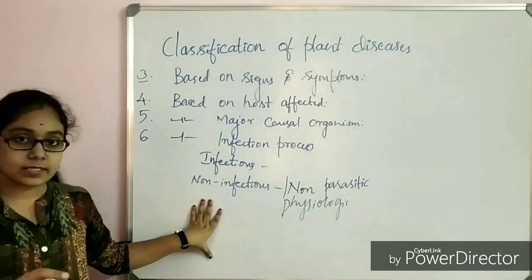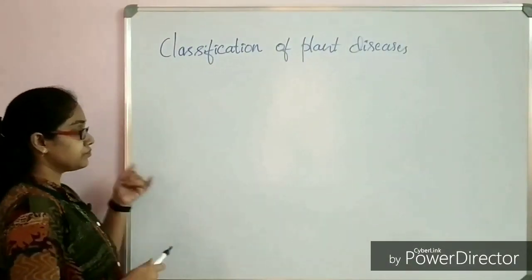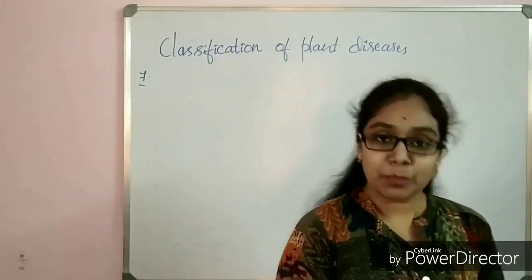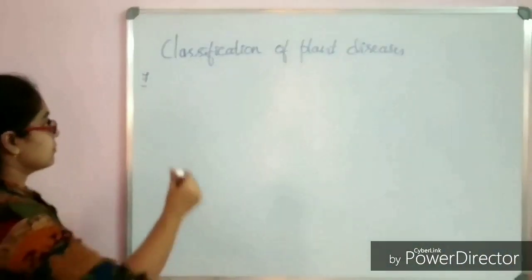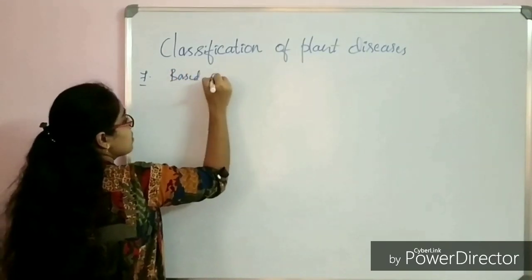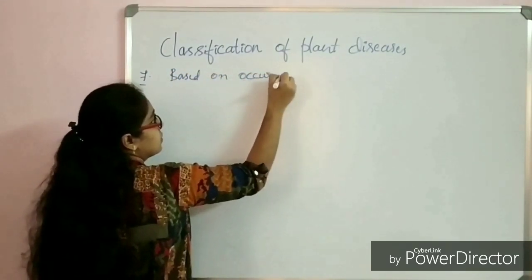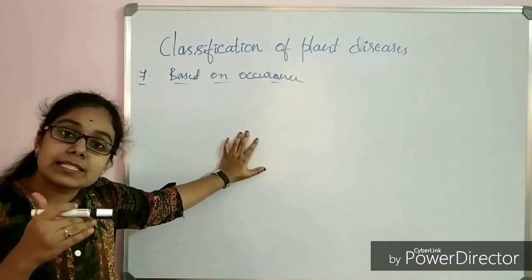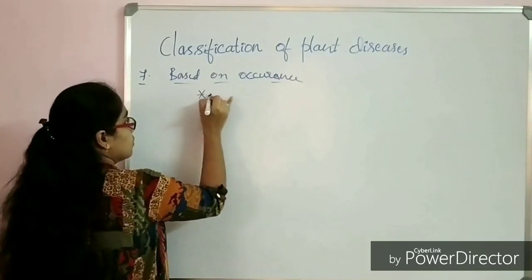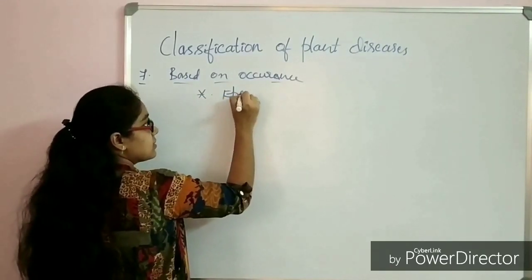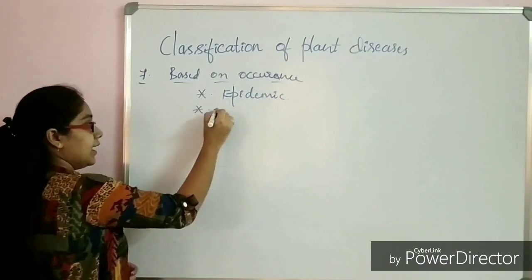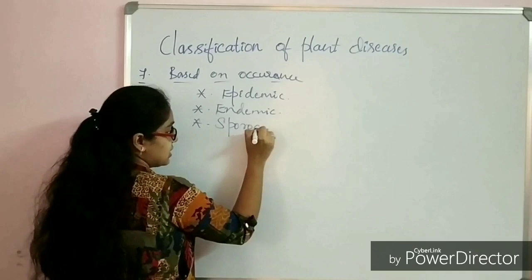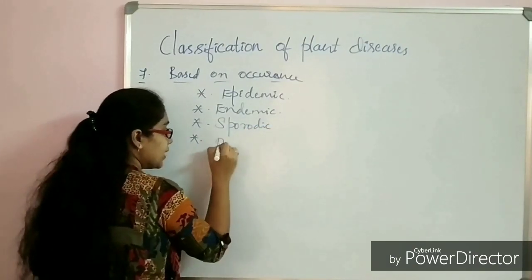Now let us move to the seventh and last category. Here, plant diseases are classified based upon the spread and occurrence. In this category we classify plant diseases into four types: first, epidemic plant diseases; secondly, endemic plant diseases; third, sporadic plant diseases; and finally, pandemic plant diseases.